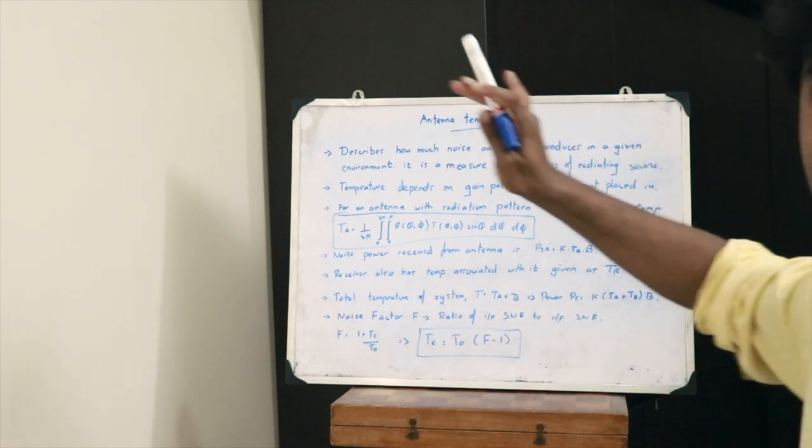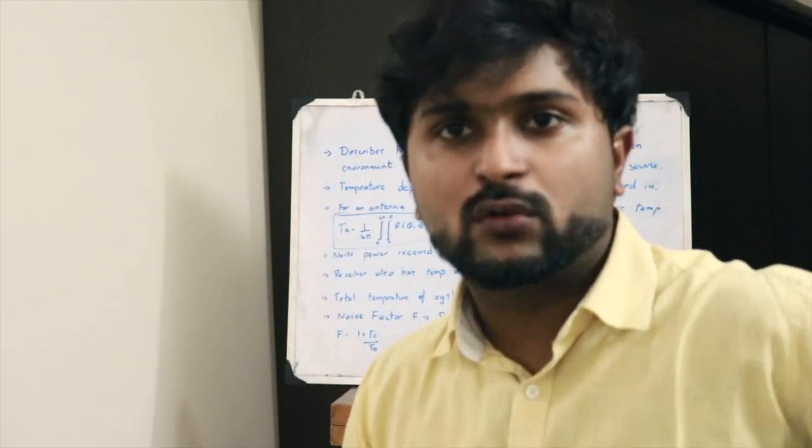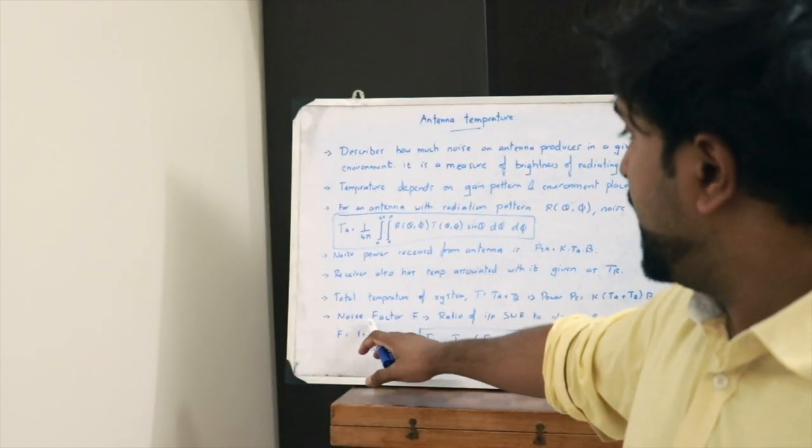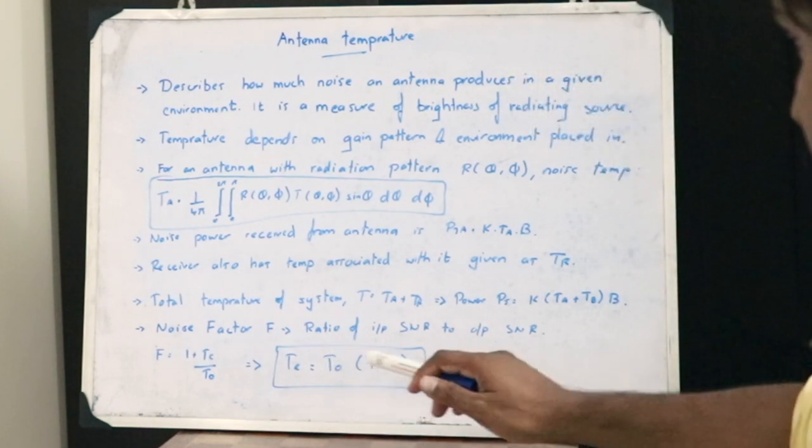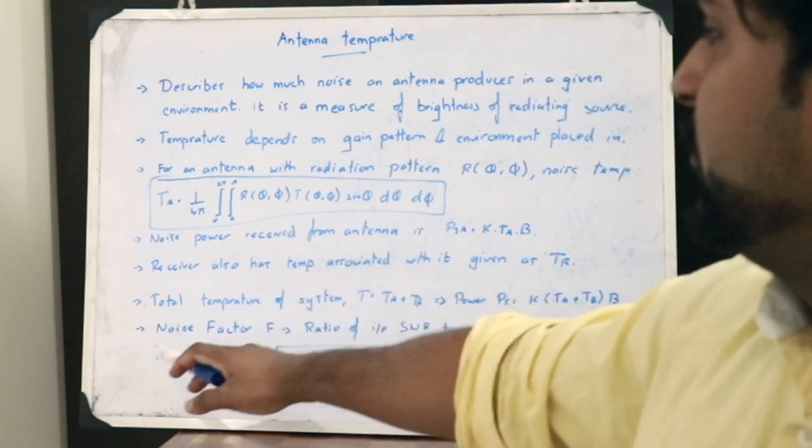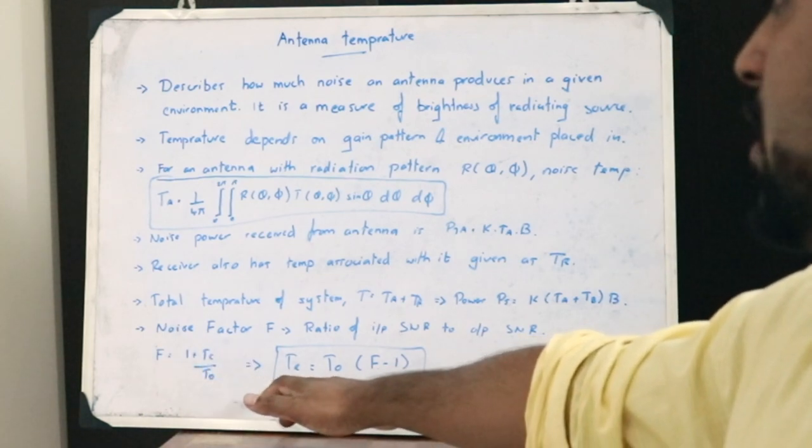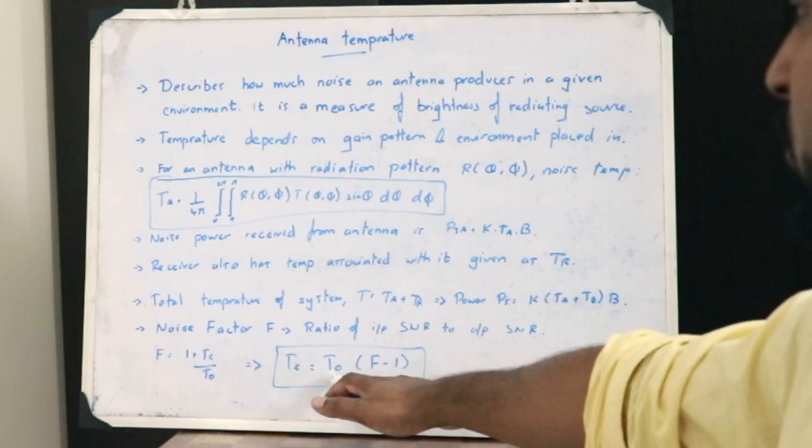Now we come to a factor which is referred to as noise factor F. Noise factor F is given as the ratio of the input signal-to-noise ratio to the output signal-to-noise ratio. F = 1 + T_e/T_0, where T_e = T_0(F - 1).